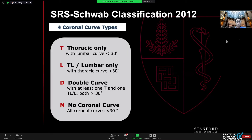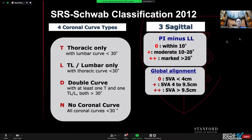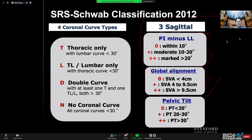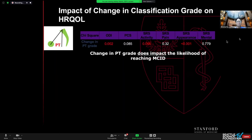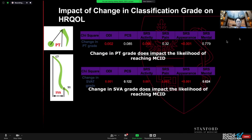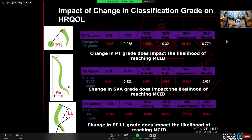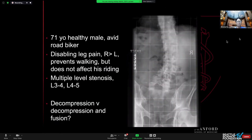We all know about the SRS-Schwab classification. I think this is really important to keep in mind even when addressing degenerative problems. What really got my attention is the fact that addressing these problems and changing your classification can not just make your x-ray look better, but actually improve the patient's quality of life.